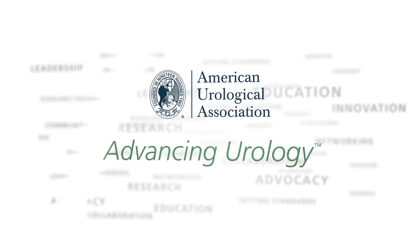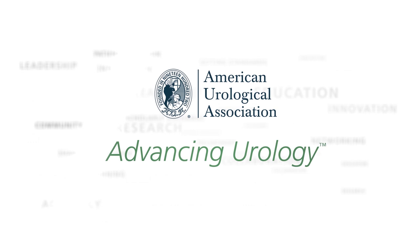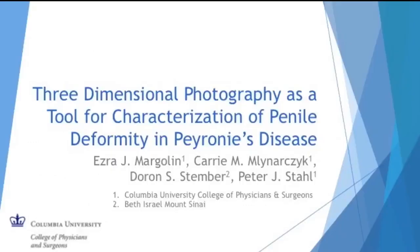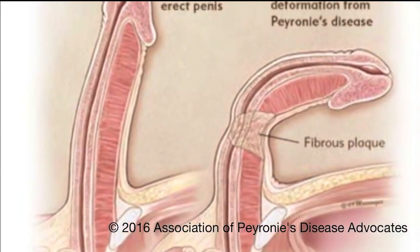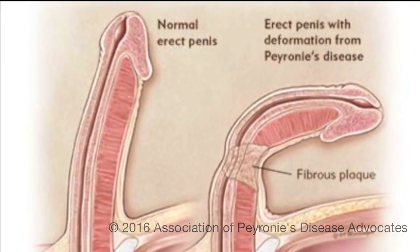Hit the subscribe button or visit us at auau.auanet.org. Peyronie's disease is an acquired fibrotic disease of the tunica albuginea that can cause a range of penile deformity.